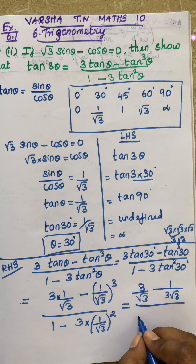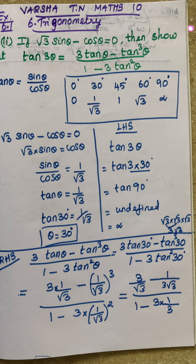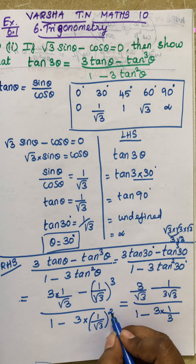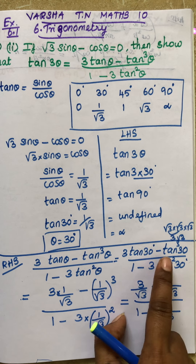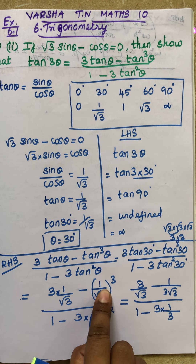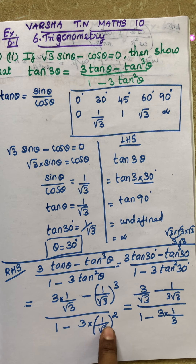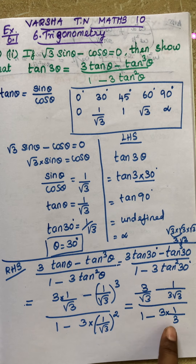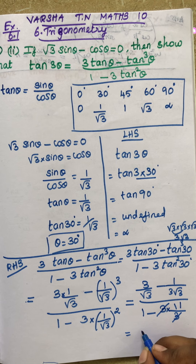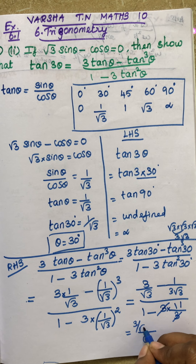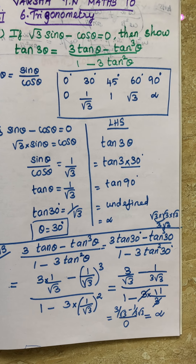In the denominator, 1 minus 3 times (1/√3) squared. Since 1 squared is 1 and √3 squared is 3, the 3 cancels, leaving 1 minus 1 equals 0. So the denominator is 0. Any value divided by 0 is infinity, which means RHS is also undefined, i.e., infinity.